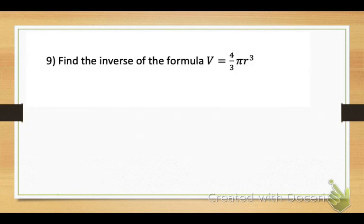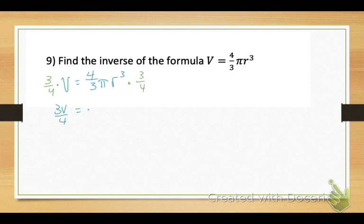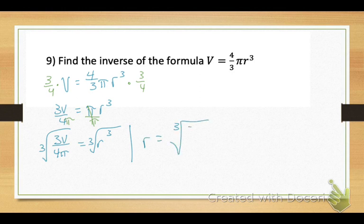Number 9: find the inverse of the formula for volume of a sphere — V equals 4/3 pi times r cubed. Clear the fraction by multiplying by the reciprocal, putting volume in the numerator. Divide by pi, which joins the denominator. So 3V over 4pi equals r cubed. Take the cube root of each side: radius equals the cube root of 3 times volume divided by 4pi.